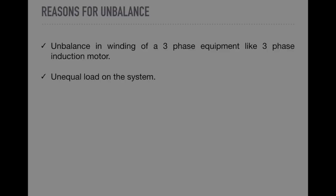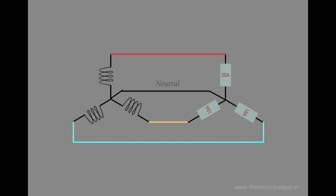You will see in our distribution system, a neutral is always provided, as load on the phases is not defined or equal. And the different phases draw different current which makes the distribution system unbalanced.